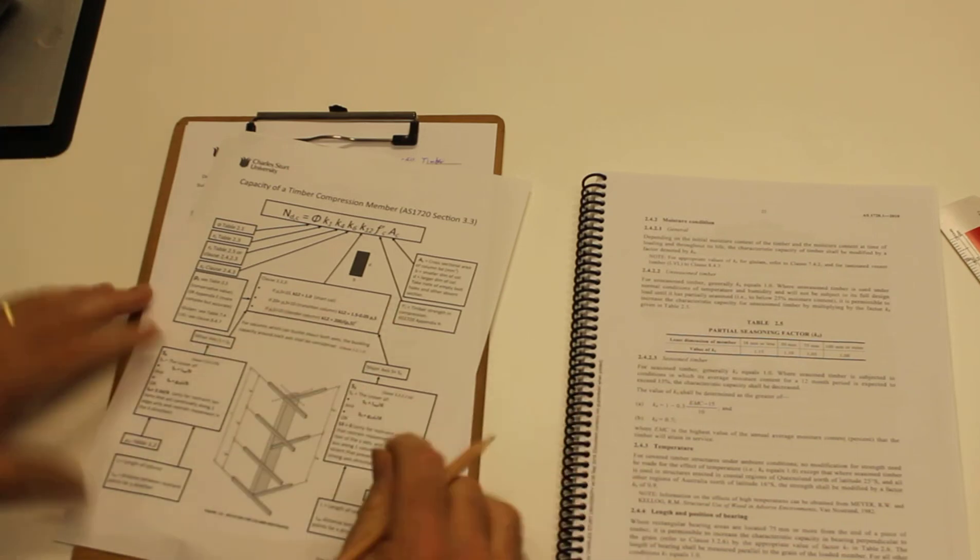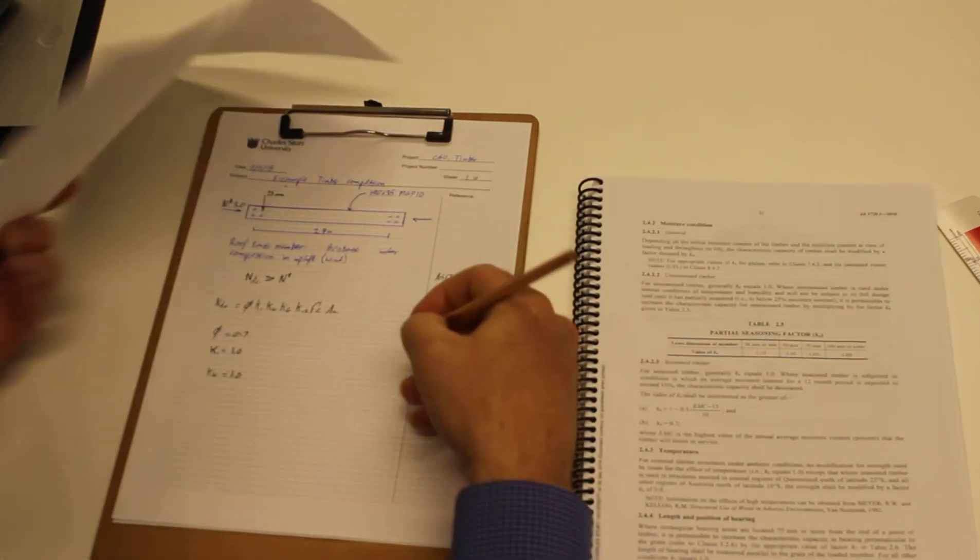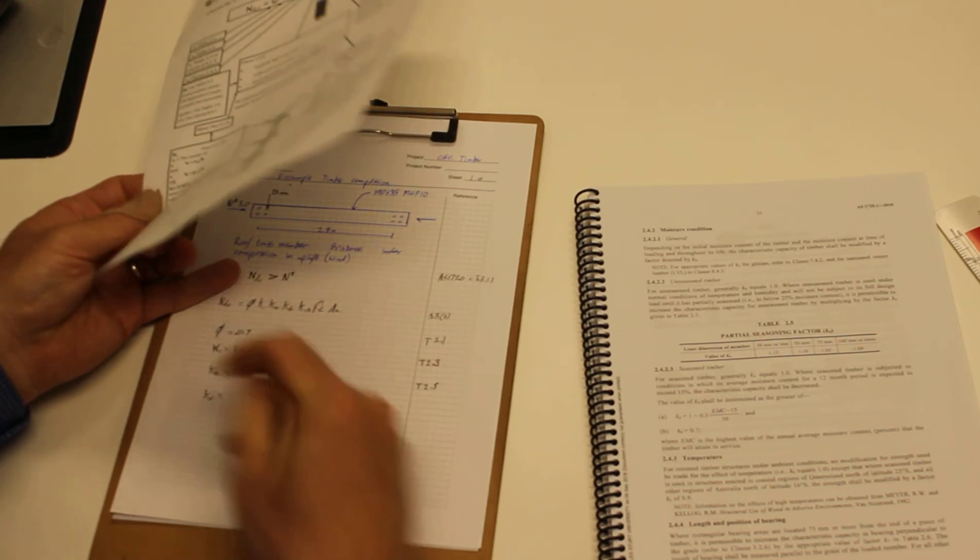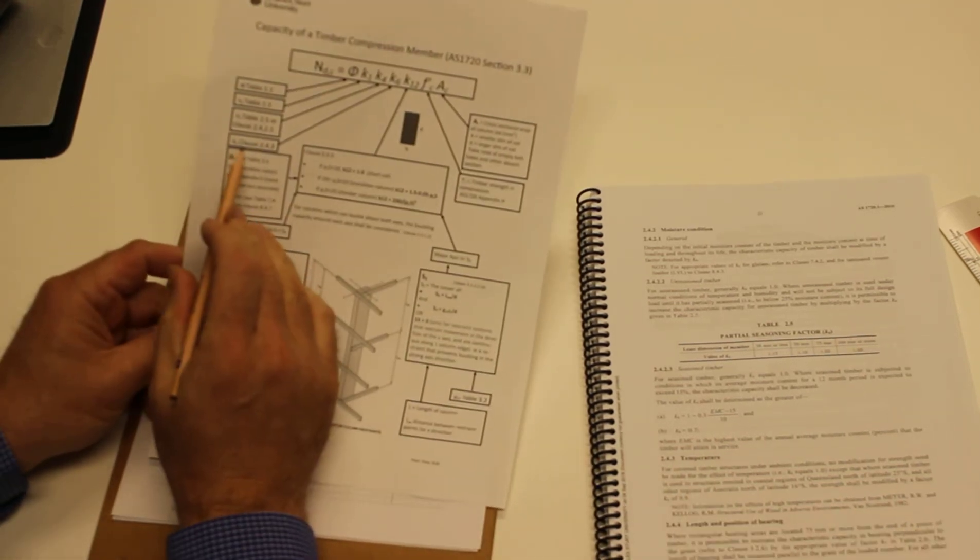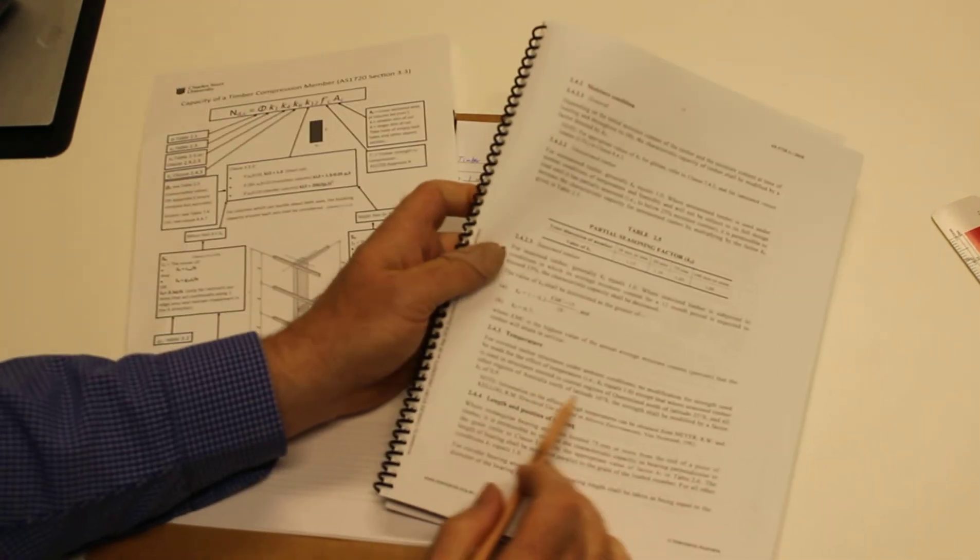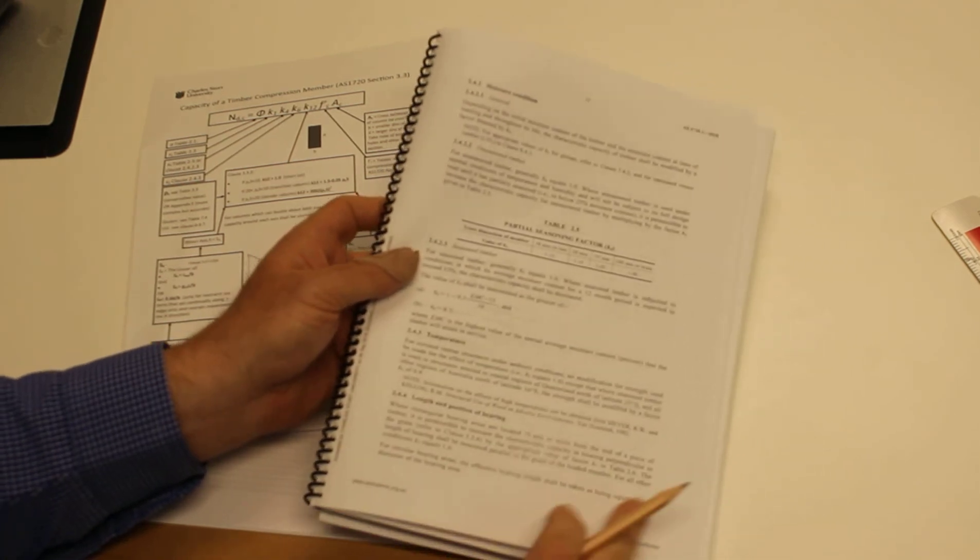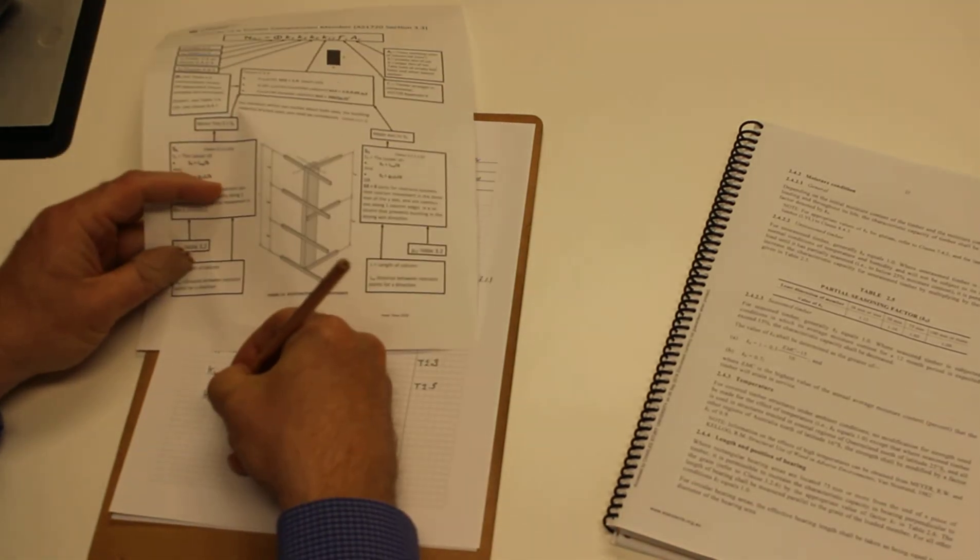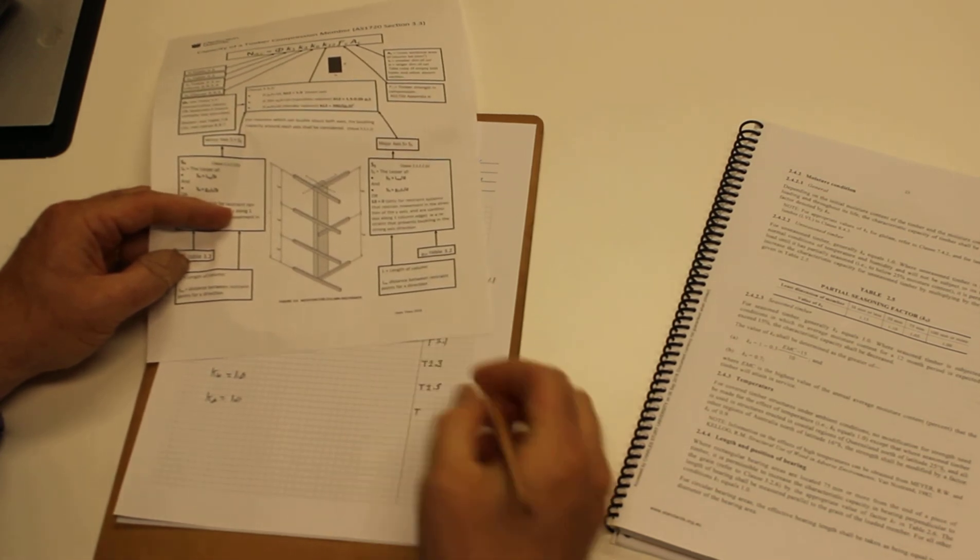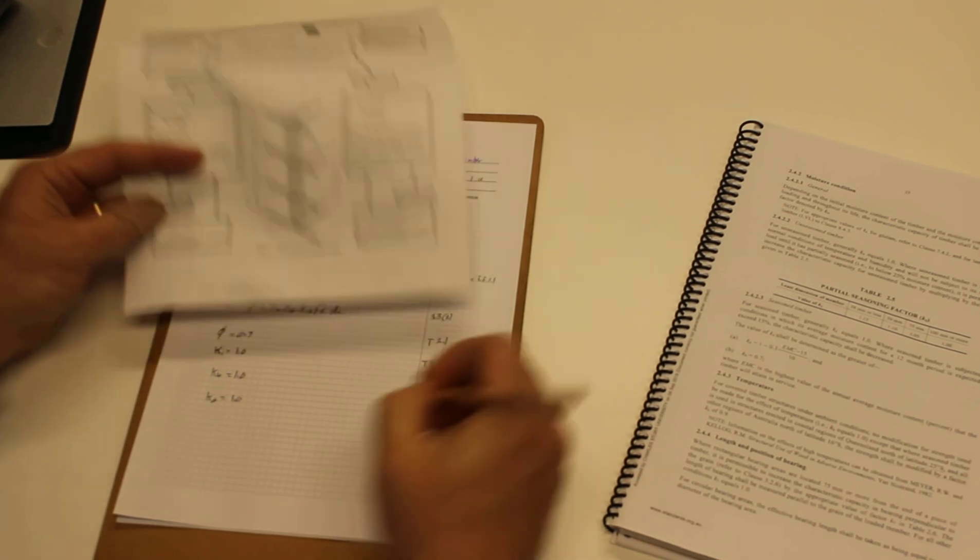K6 is our temperature factor. K6 comes from clause 2.4.3, temperature factor. We are in Brisbane, but we're still south of 25 degrees south, so in fact k6 equals 1.0, as it almost always does unless you're far north Queensland somewhere like that. That is clause 2.4.3.